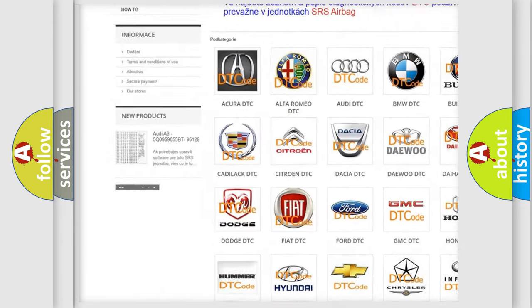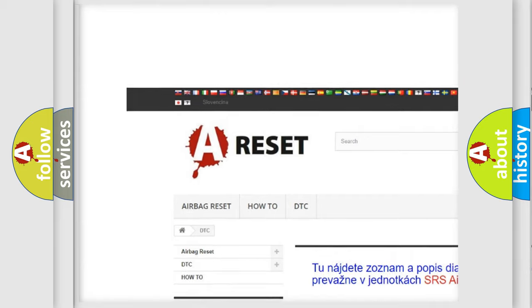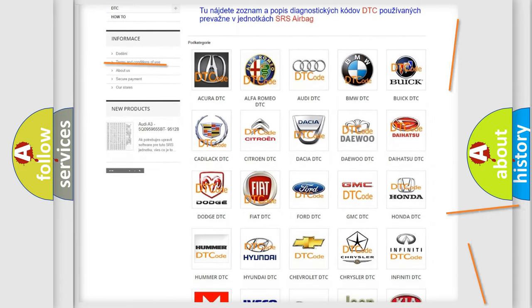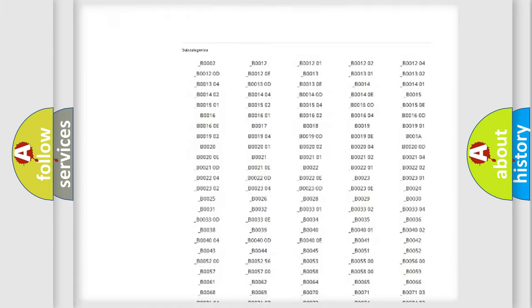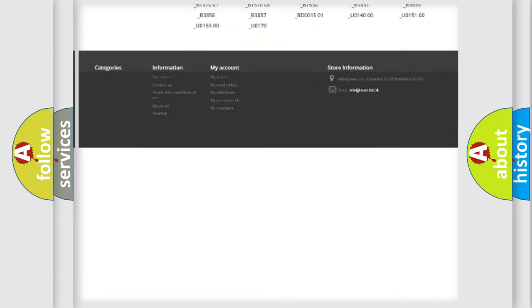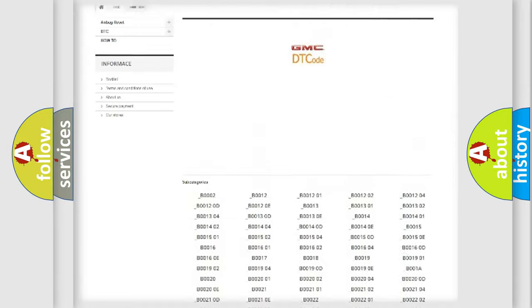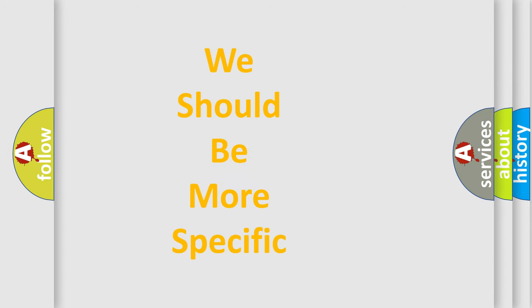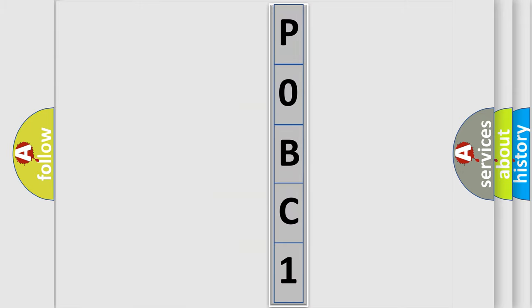Our website airbagreset.sk produces useful videos for you. You do not have to go through the OBD2 protocol anymore to know how to troubleshoot any car breakdown. You will find all the diagnostic codes that can be diagnosed in GMC vehicles, also many other useful things. The following demonstration will help you look into the world of software for car control units.